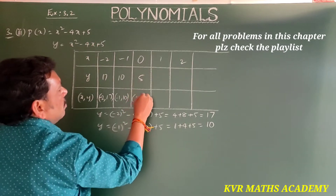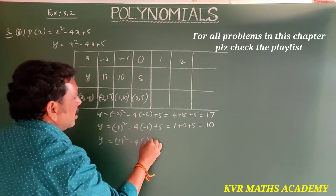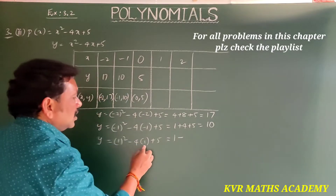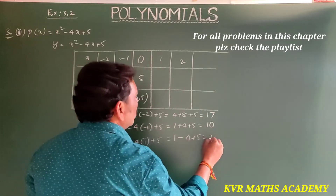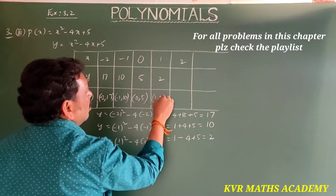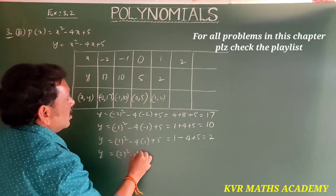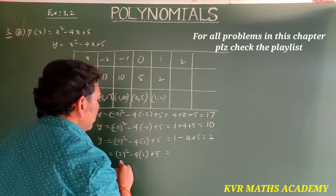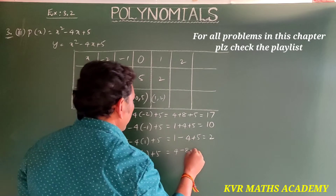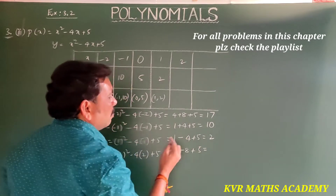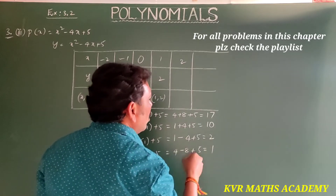For x = 0: y = 0 - 0 + 5 = 5, giving (0, 5). For x = 1: y = 1 - 4 + 5 = 2, giving (1, 2). For x = 2: y = 4 - 8 + 5 = 1, giving (2, 1).